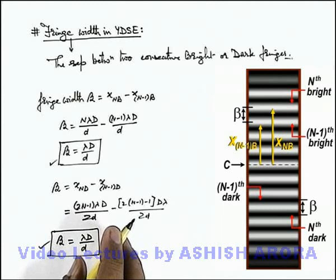The maxima or bright fringe which is obtained at the centre of screen is the central maxima, on the two sides of which fringe pattern is being produced.